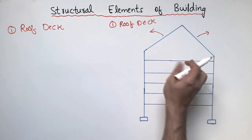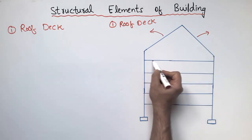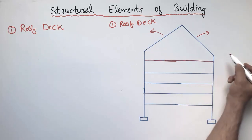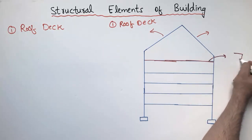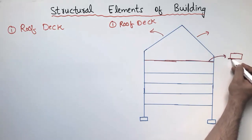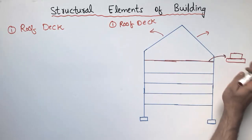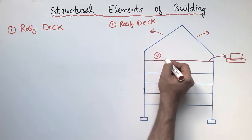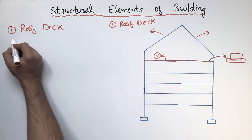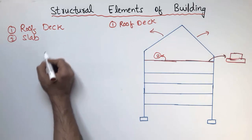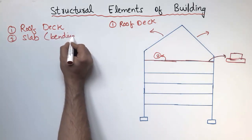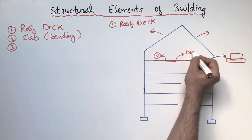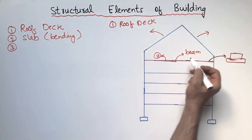The second structural element of the building is the slab. The slab is placed on top of the beam. You can see this horizontal member showing both the slab and beam connection. If I draw the cross section, the slab will be here and below the slab there will be a beam — they are monolithically joined together. The slab is mostly designed for bending stresses.